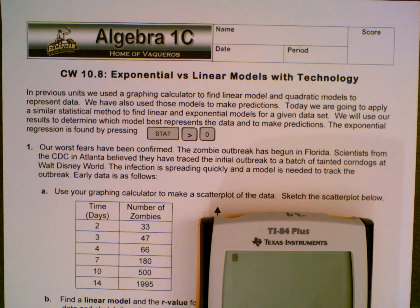Question number 1. Our worst fears have been confirmed. The zombie outbreak has begun in Florida. Scientists from the CDC in Atlanta believe they have traced the initial outbreak to a batch of tainted corndogs at Walt Disney World. The infection is spreading quickly and a model is needed to track the outbreak. Early data is as follows. Use your graphing calculator to make a scatterplot of the data and sketch the scatterplot below.